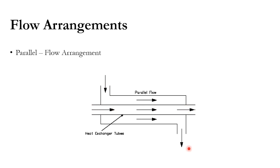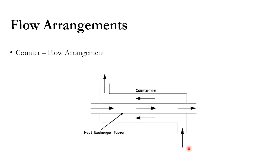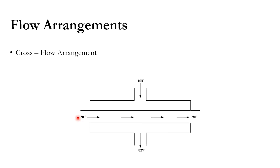The second arrangement is counter flow, where the hot and cold fluids flow in opposite directions — if the cold fluid enters from side one, the hot fluid enters from side two. They exit from opposite sides. Counter current flow is preferably used in industry. The third is cross flow, where one fluid crosses the other perpendicularly. These three — co-current, counter current, and cross flow — are the commonly used arrangements.